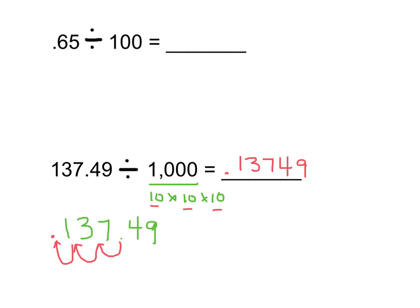Let's try the one at the top — 65 hundredths divided by 100. We could think about that as 65 hundredths of a gram of gold divided into 100 equal-size pieces. How many grams of gold is each piece worth? If we have 65 hundredths, and knowing that 100 is made up of 10 times 10, I need to move my decimal place to the left two times, once for each group of 10. Moving it left once and again twice, my decimal place ends up here, and I need to put in zeros to hold those spots.